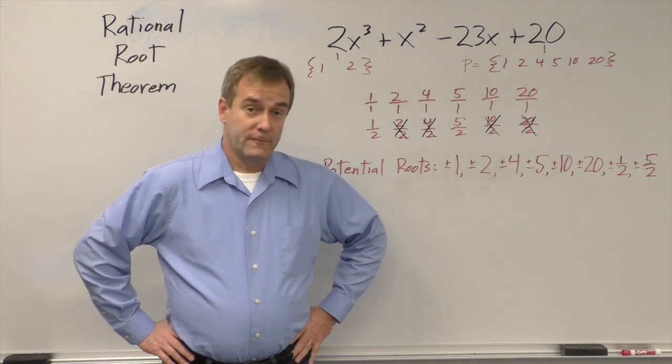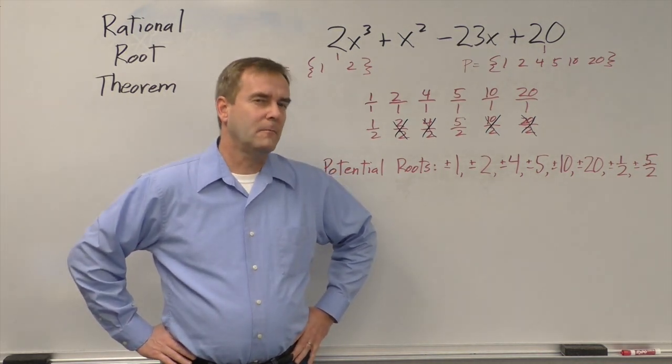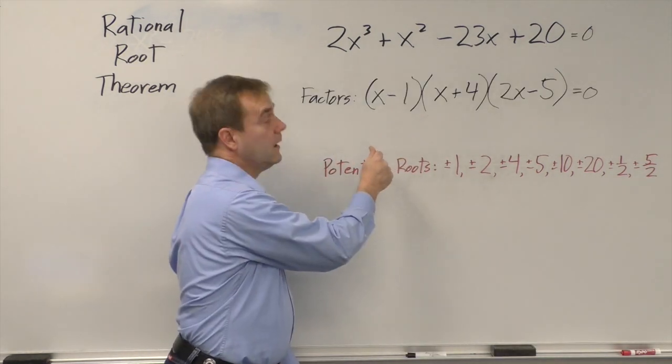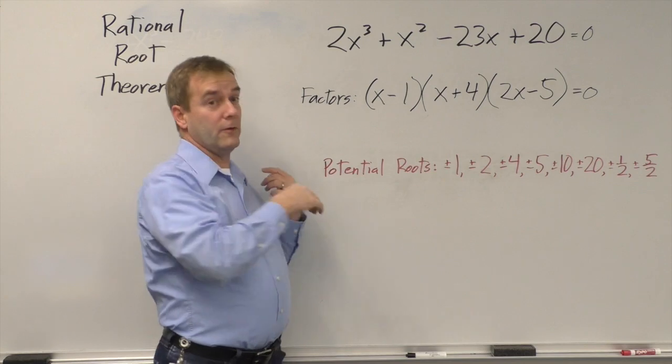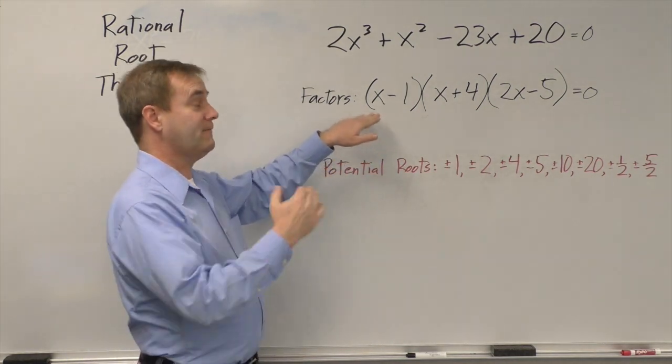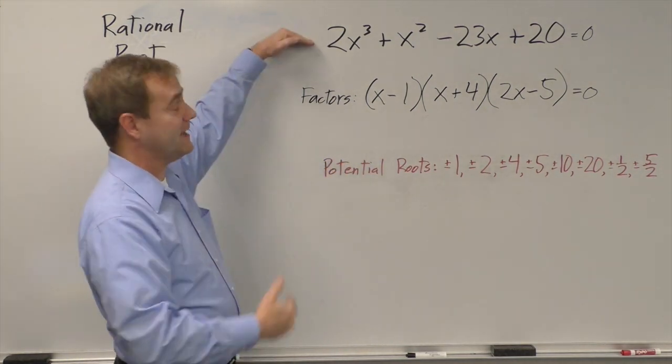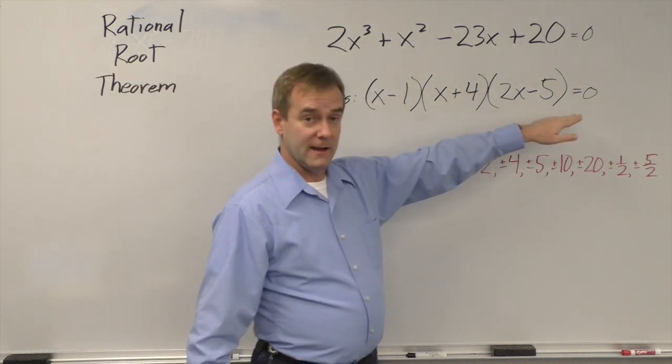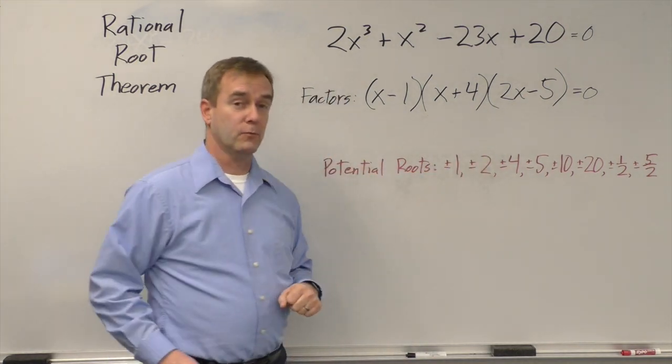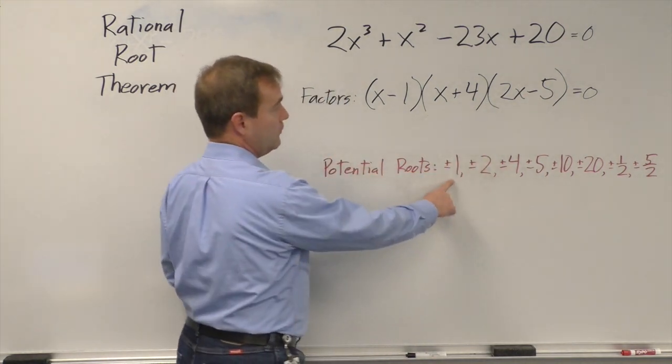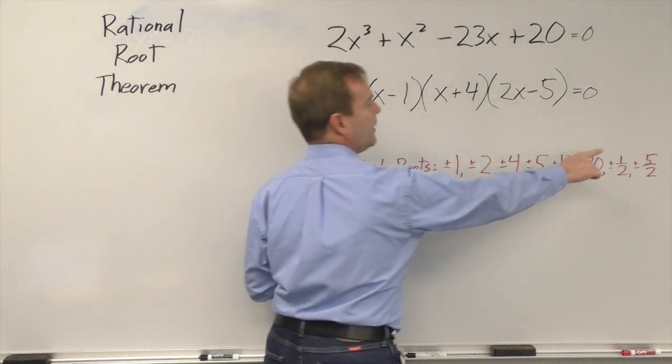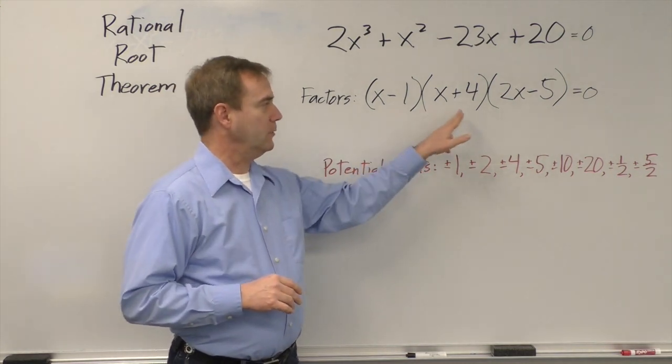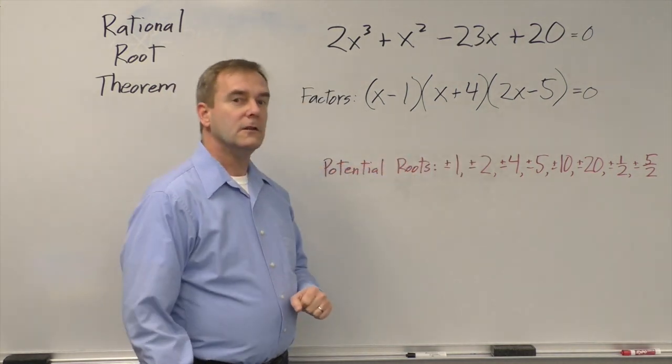What I want to touch on now for a few seconds is why. Why do they have to come from this list? And to do that, I need the factors back. Remember, the roots that are the right roots came from these factors. And these factors were equivalent representations of the original polynomial taken apart into things that multiply. And we've set it equal to zero, so the zero products property will let us find those roots. So we found positive 1, we found negative 4, and we found positive 5 over 2.